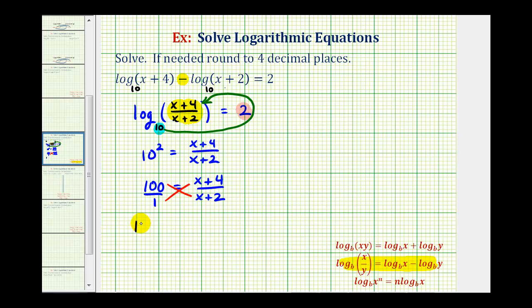Again, we get the same thing if we multiplied both sides of the equation by the quantity x plus two.